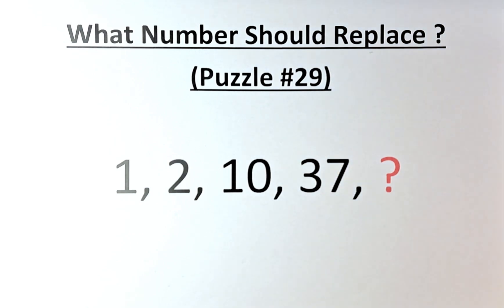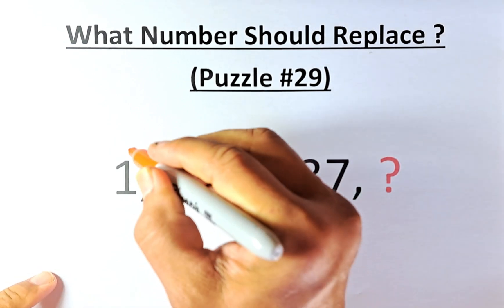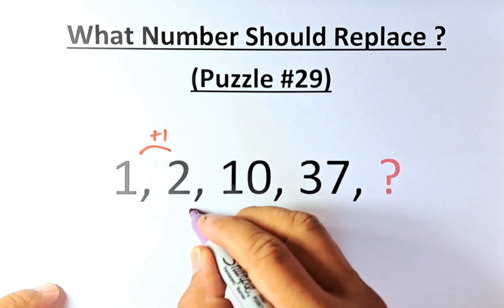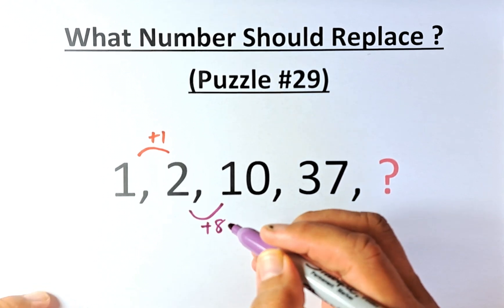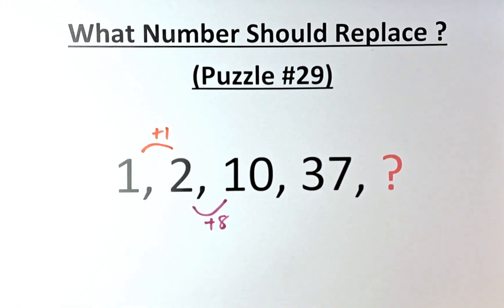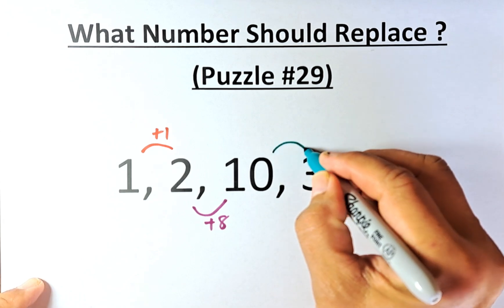So from 1 to 2, you add 1, plus 1. From 2 to 10, you plus 8. And then from 10 to 37, let me adjust the paper, 10 to 37, you are going to add 27.